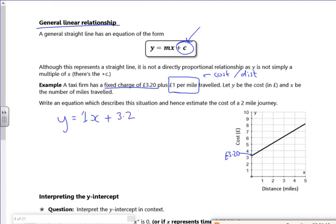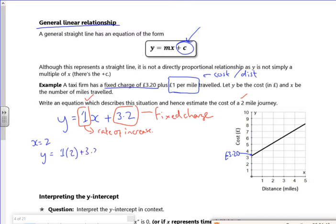So I've got my fixed charge and I've got the rate at which it's used. Even the word rate tells you it's gradient. The rate of increase. So write down an equation which describes the situation and hence estimate the cost for a 2 mile journey. So if x is 2, y is 1 times 2 plus 3.2. So 5 and 20. There you go.